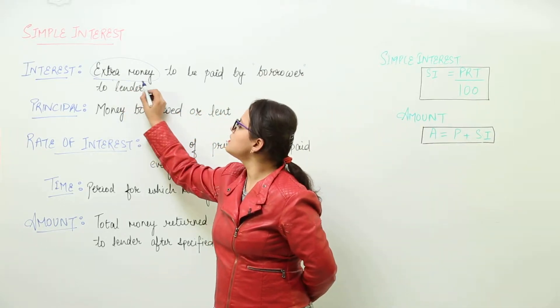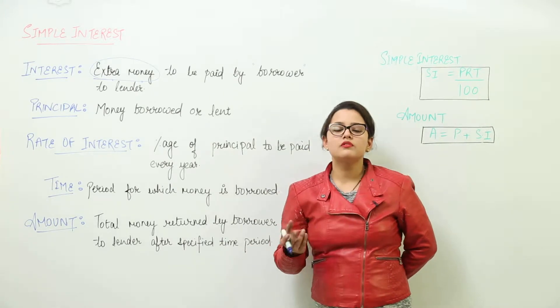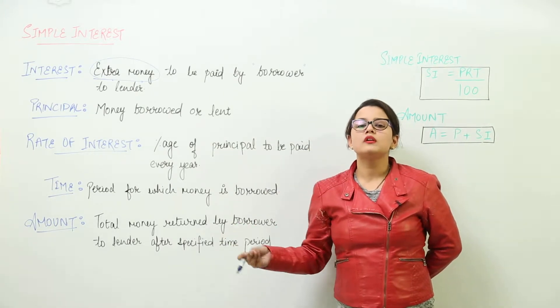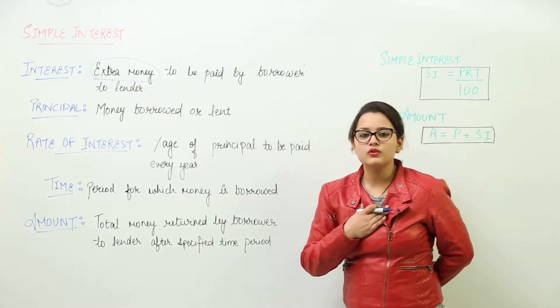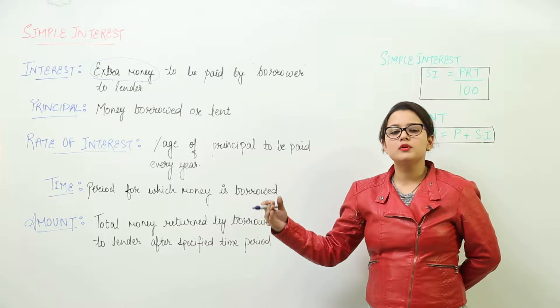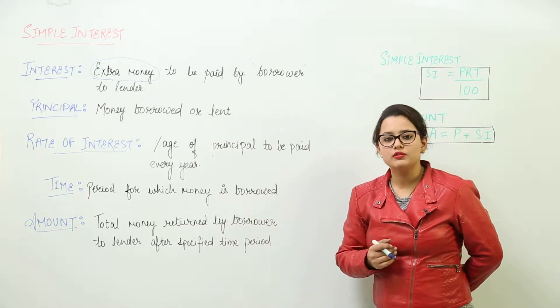Now, who is the borrower? Say for example, I need some money. I need 100 rupees. I asked my friend to lend me 100 rupees. So I am the borrower because I am borrowing money, and my friend is the lender because she is lending me 100 rupees.